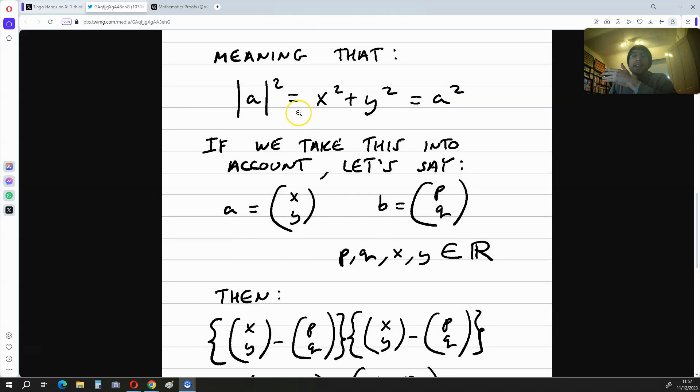This over here means that the magnitude of a minus b squared is simply the same as a minus b squared. If we take this understanding up here into account and we say that we have the vector a, which is x, y, and b, which is the vector p, q, where p, q, x, and y are elements of the real numbers,